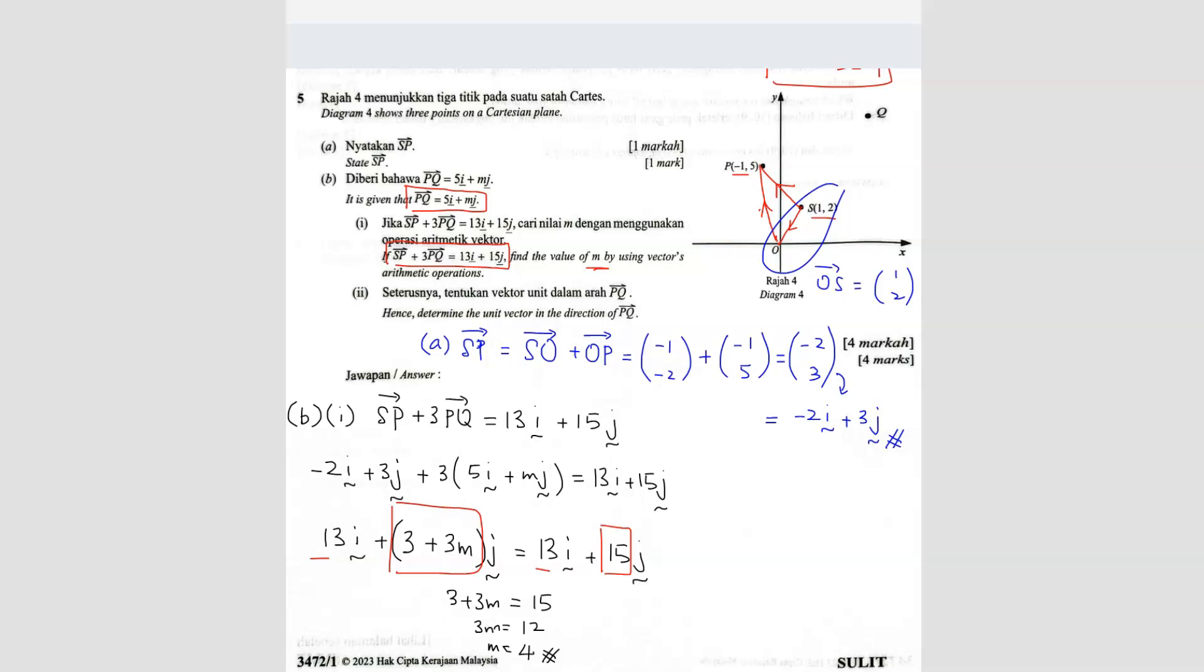Question C. Hence, determine the unit vector of PQ. So we already know what is PQ. PQ is, let me just write down here. PQ is 5I plus M is 4. So MJ.